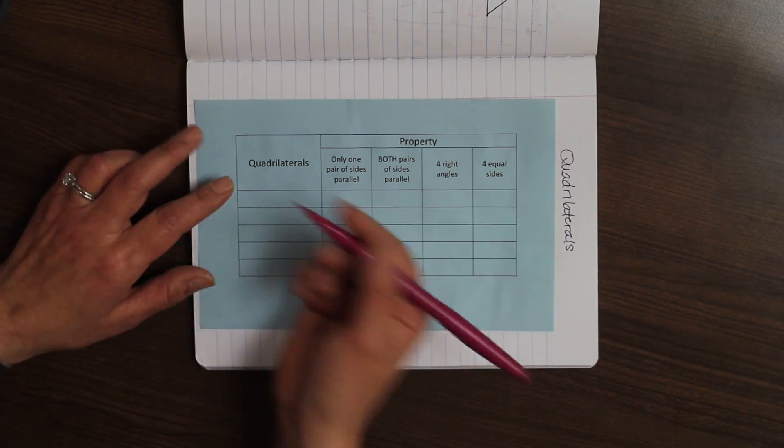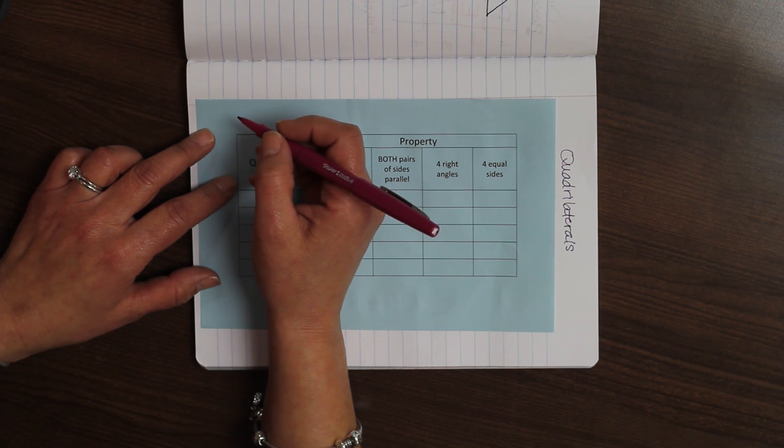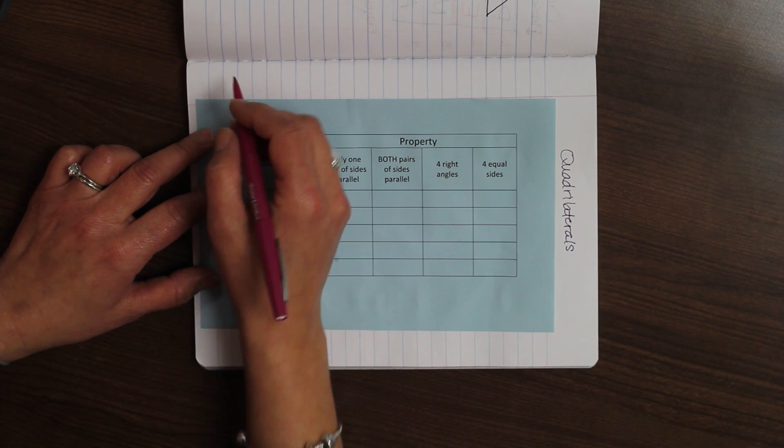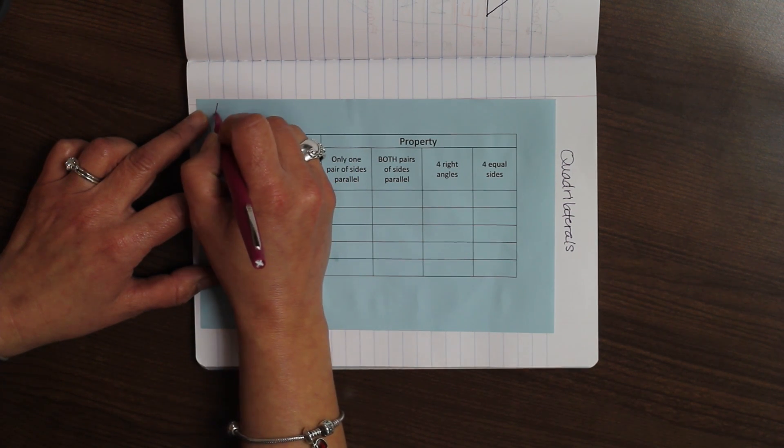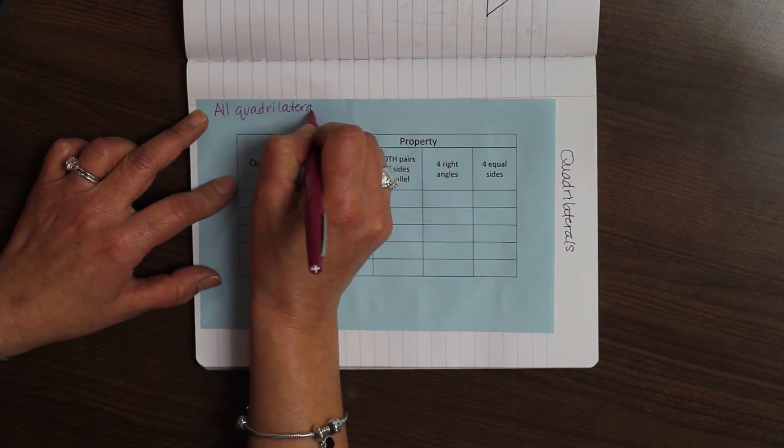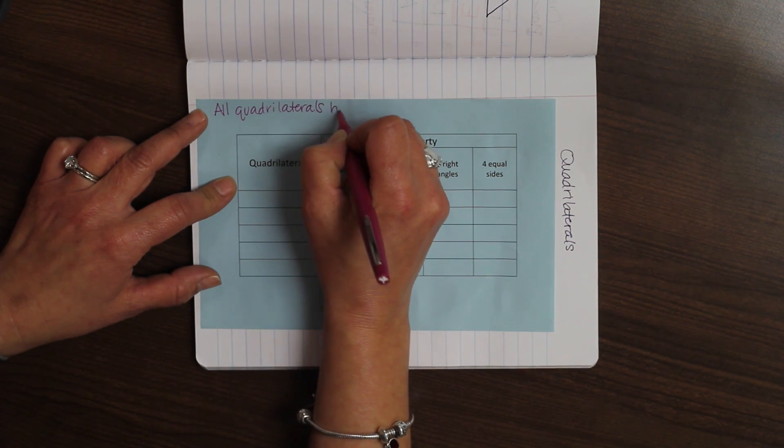On your piece of paper, just glue it on the right-hand side. And one thing I want you to write, just so you remember, is that all quadrilaterals have four sides. And one way to remember is quad means four. So, let's write that at the top, so we don't forget.